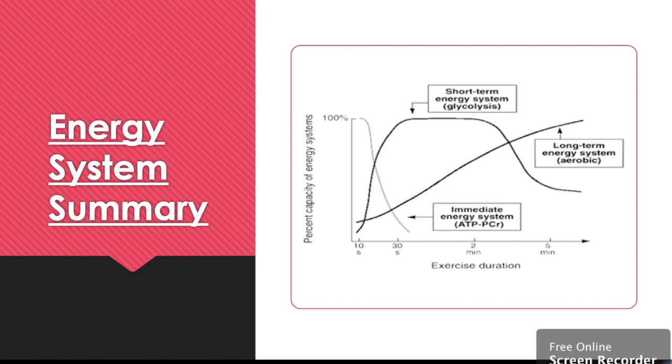Okay, to summarize how the energy systems work together, we have a little diagram here. On this axis, the one going up, that's our intensity from zero to 100% effort. On this axis, we have our time. As we can see, our immediate energy system, our ATP PC system, that is done after about 10 seconds.